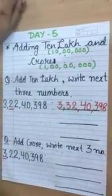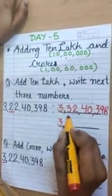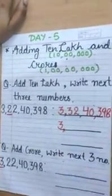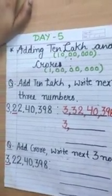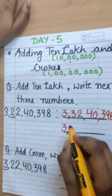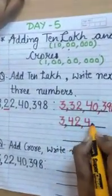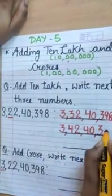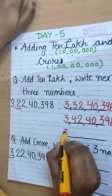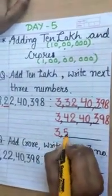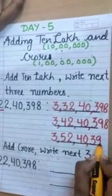That was the first number. Now if I add 10 lakh more to 32 lakh, the new number will be 3 crore 42 lakh 40,398. And the next number will be 3 crore 52 lakh 40,398.